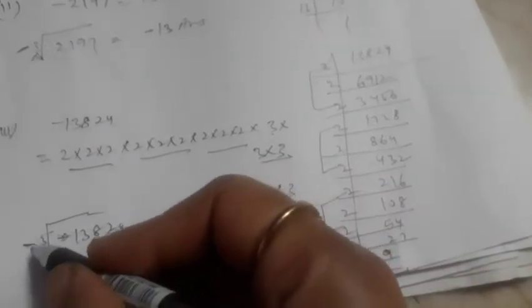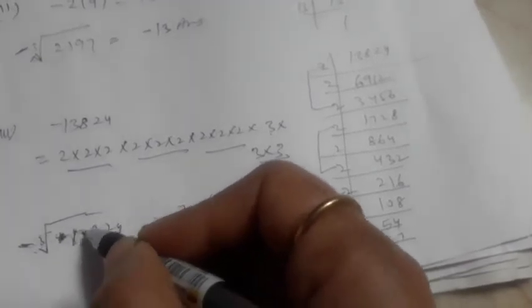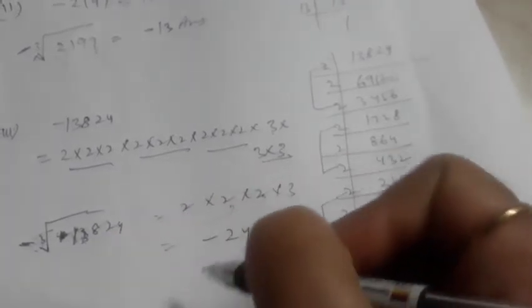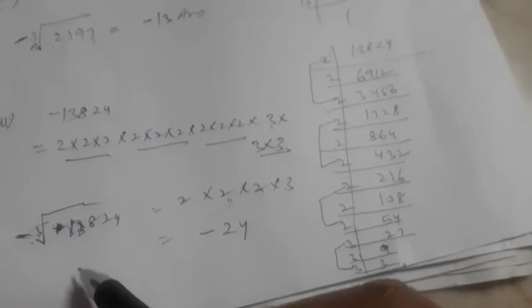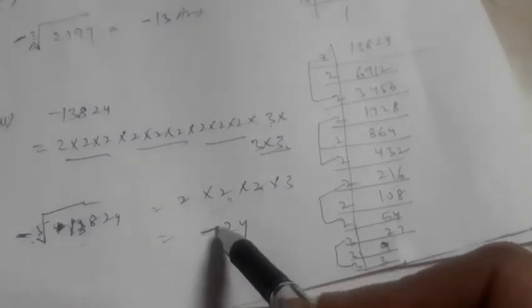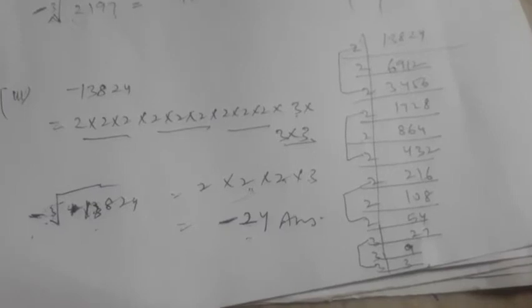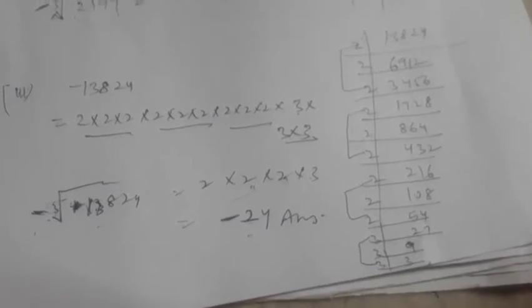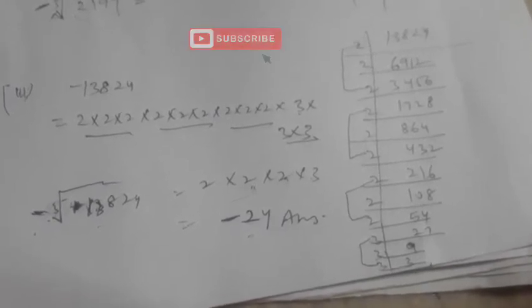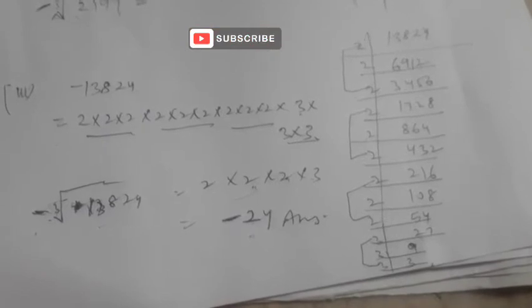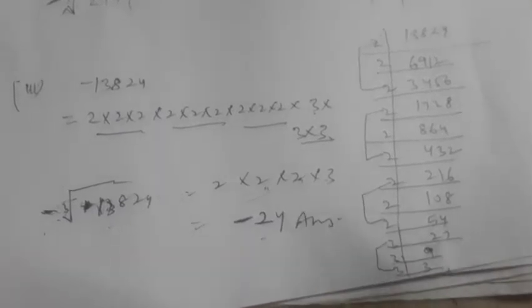If we put the cube root here it will become positive for 13824, and because of the negative sign outside it comes as minus 24. That is our answer. Hope the question is clear. If there is any doubt you can ask me by commenting in the comment box. Now come to the 4th part.